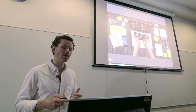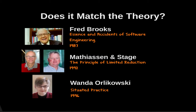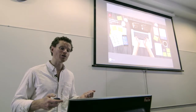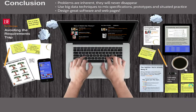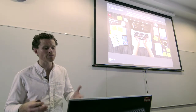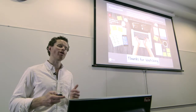How does this match with the theory? Sadly, we have not found the silver bullet that Brooks predicted we wouldn't find. But what we have found is that through a combination of Mathiassen and Stage's prototypes and specifications, we're able to reduce uncertainty and complexity at the same time, and employ both of those techniques along with Orlakovsky's situated practice to understand how people are really going to use that software in the real world. In conclusion, the problems around developing great software and web pages are never going to go away — they're inherent, they will never be solved. But through using a mix of big data techniques with prototyping, specifications, and situated practice, you can avoid the requirements trap and build really great software and web pages. Thanks very much for watching.